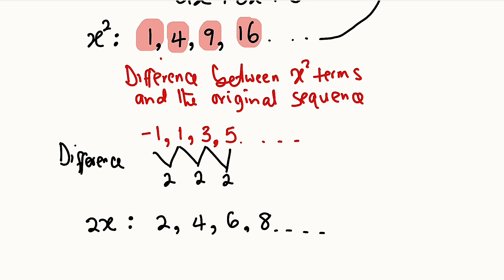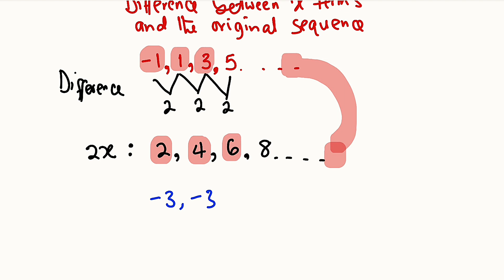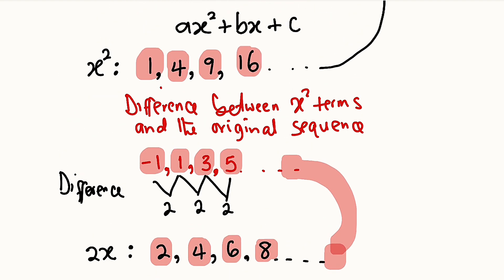Finally, to find our constant we take the difference of this 2x sequence from the previous sequence (−1, 1, 3, 5). From 2 to get to −1 we subtract 3; from 4 to get to 1 we subtract 3; from 6 to get to 3 we subtract 3; from 8 to get to 5 we subtract 3. We have a constant common difference, so our constant c is −3.